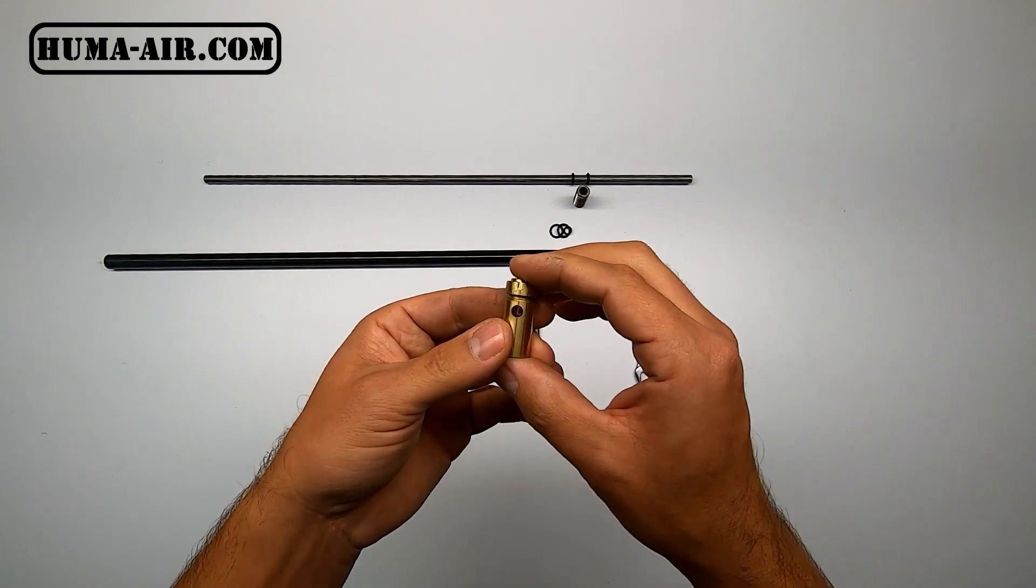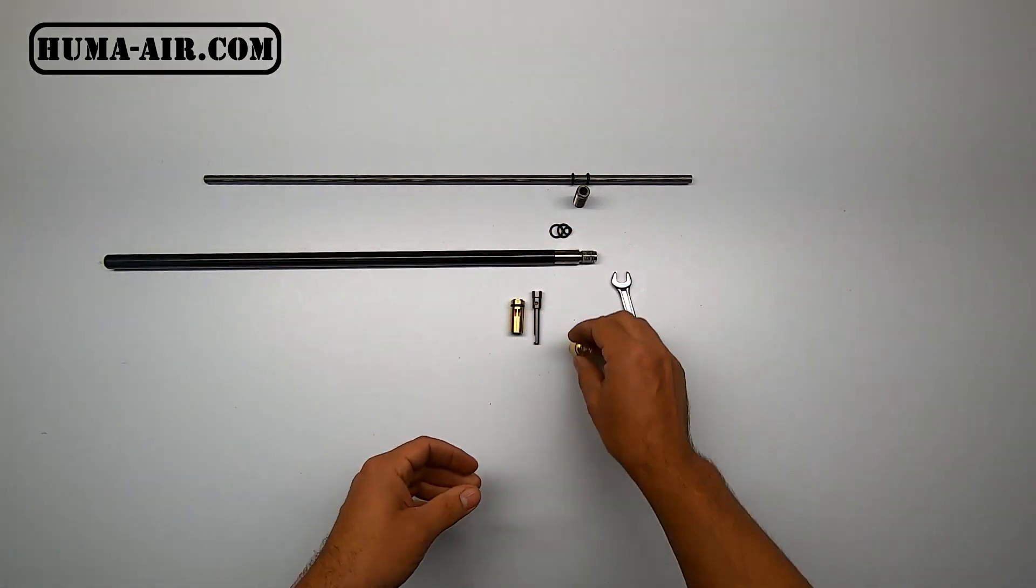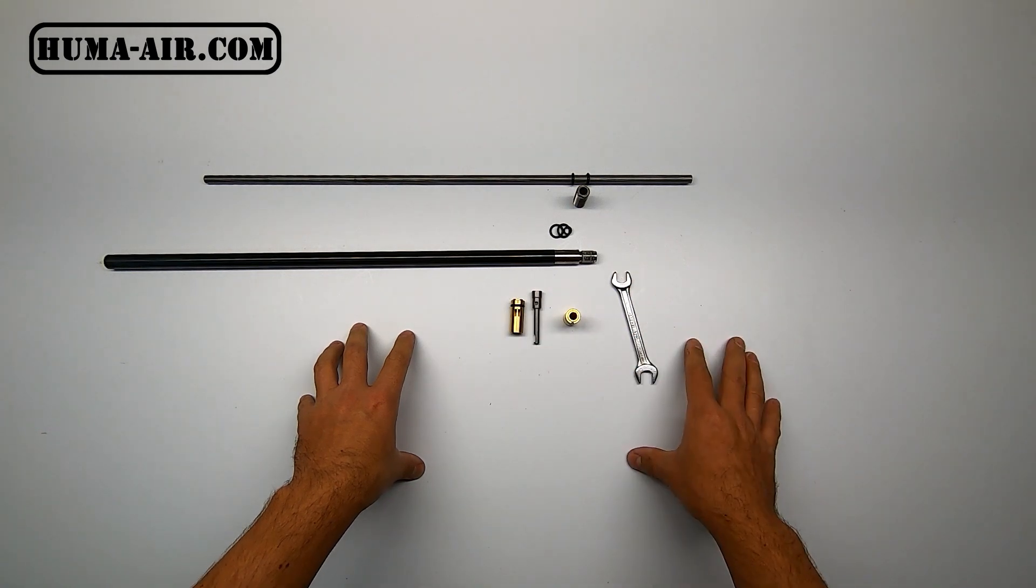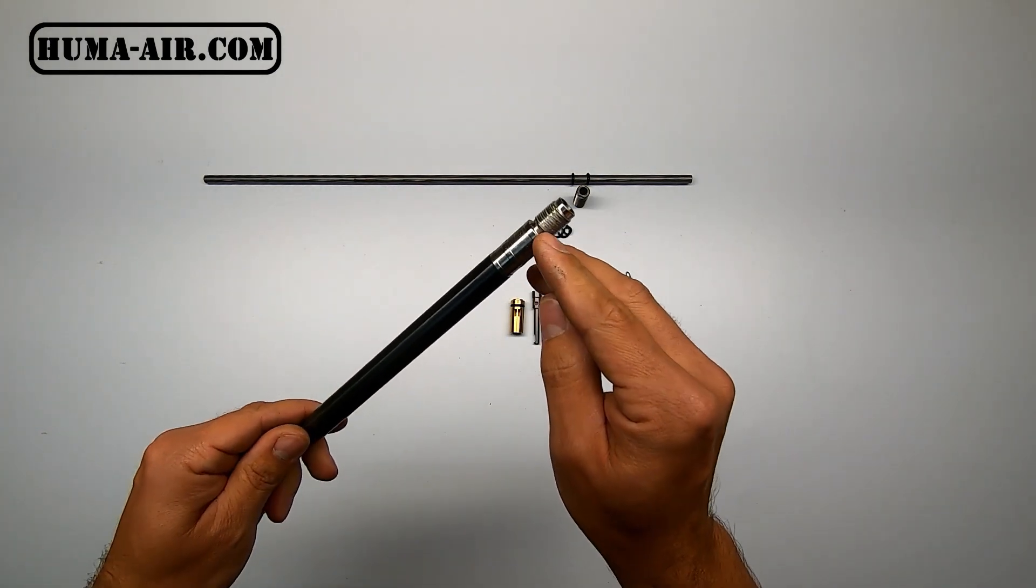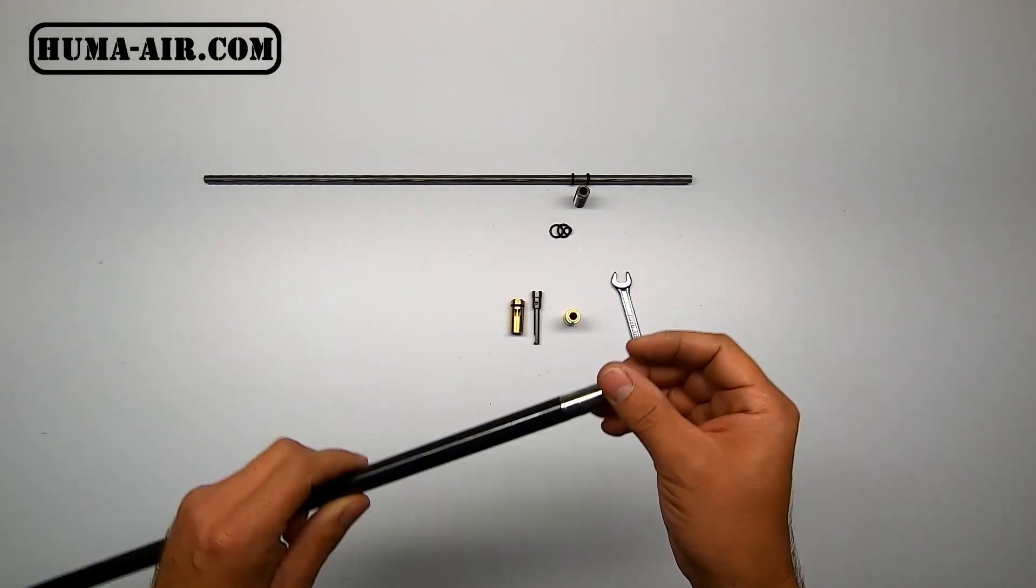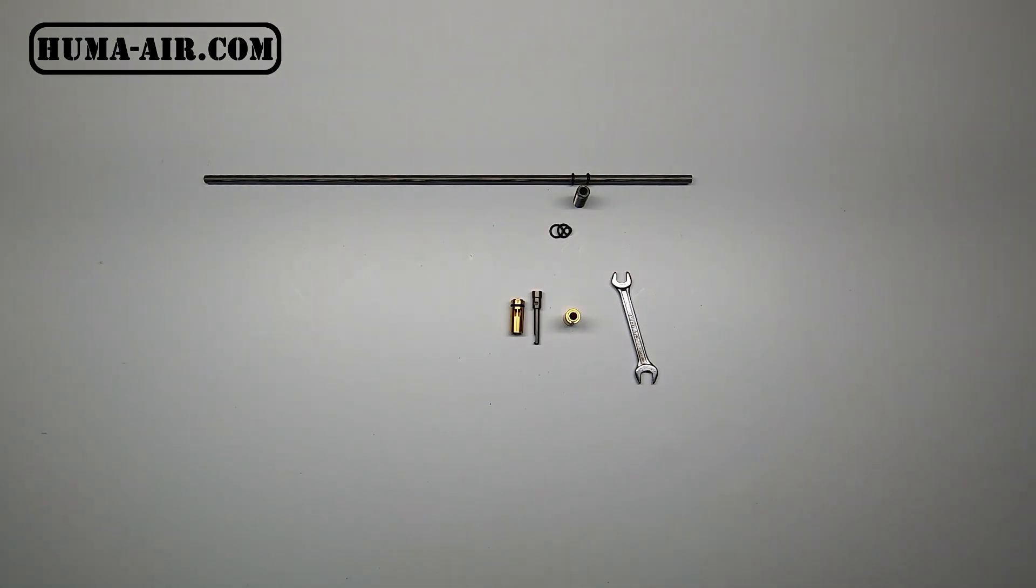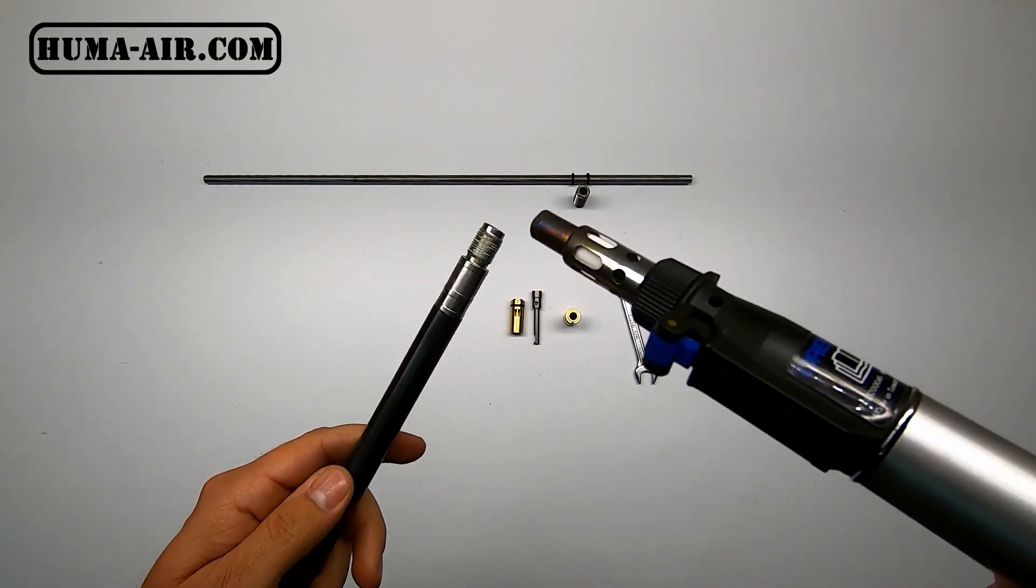Back here at the table we successfully removed our original transfer port. But before we screw on the Yuma air transfer port, we still have to clean the threads on the barrel sleeve.